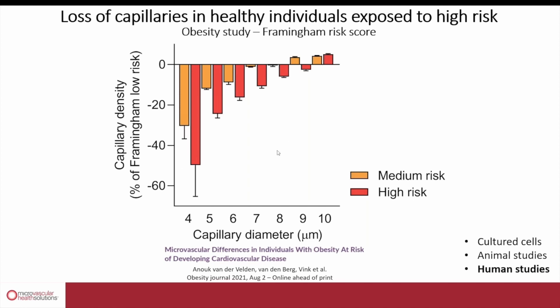This slide showed the impact of obesity on microvascular health by counting the number of the smallest capillaries in people at low, medium, or high risk for future cardiovascular disease. These are still healthy individuals, but by adding up all risk factors like age, body size, and smoking, you can see that people at high risk already lose about 50% of their smallest capillaries compared to low-risk individuals.